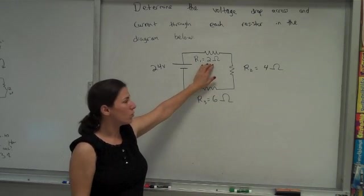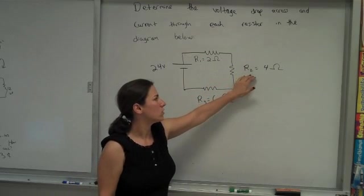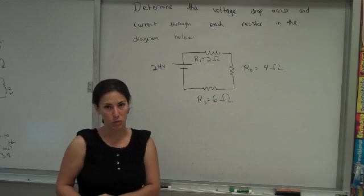We have at first a 2 ohm resistor, that's R1. Resistor 2 is a 4 ohm resistor and resistor 3 is a 6 ohm resistor.